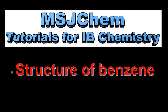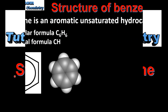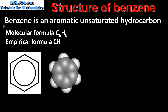This is MSJChem. In this video I'll be looking at the structure of benzene. Benzene is an aromatic unsaturated hydrocarbon. Its molecular formula is C6H6 and its empirical formula is CH. Here we have the symbol for benzene, and on the right you can see the space-filling model of benzene.